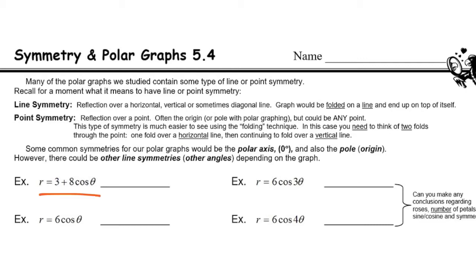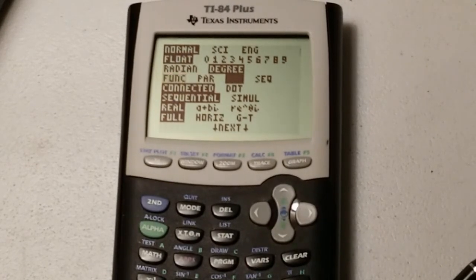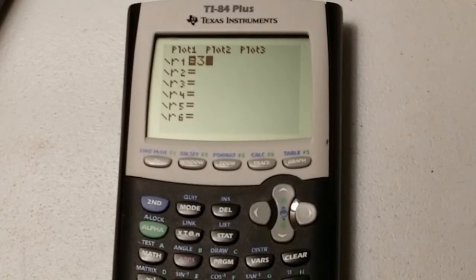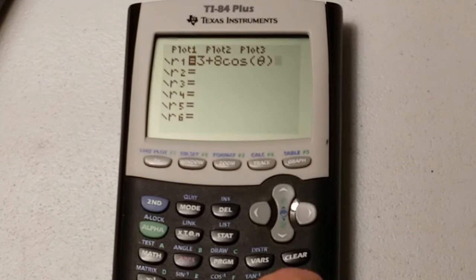3 plus 8 cosine of theta. Do you know what kind of graph that's going to be before you put it in your calculator? You're going to have to know for the test in a couple days. You want to get thinking about your chart, but for now, we're going to put it in the calculator. As a friendly reminder, in the mode menu, you want to switch to polar mode. And when you hit the y equals button, you get r equals, and you can just type in 3 plus 8 cosine of theta.